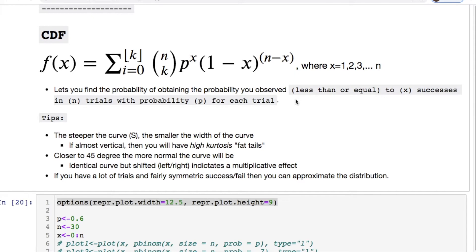Which means that if you are plotting this and looking at it as a density plot, you're going to have some really fat tails. You also get something that looks more normal as that curve starts approaching 45 degrees. If you were plotting two curves and they looked identical but they were shifted, it would just be in a multiplicative effect. You just have some variable as shifting it.